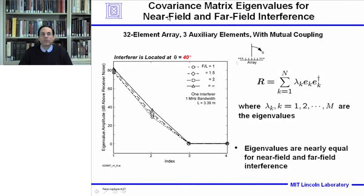Let's compute the covariance matrix eigenvalues for this example for near field and far field interference, for the 32-element array with three auxiliary elements and mutual coupling. The single interferer is located at 40 degrees from broadside. Since we have a main channel and three auxiliary channels, we have a 4x4 covariance matrix with four eigenvalues. The eigenvalues are plotted for focus near field and focus far field cases, showing very good agreement over a large dynamic range. The maximum eigenvalue is about 80 dB, with an intermediate eigenvalue around 30 to 40 dB due to finite bandwidth and array size. Eigenvalues 3 and 4 are at the noise level for both cases, and we conclude the eigenvalues are nearly equal for near field and far field interference.